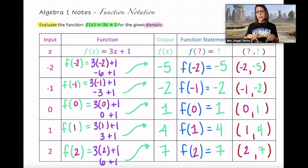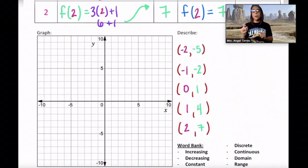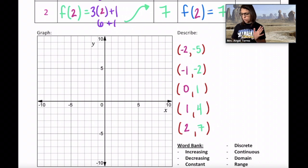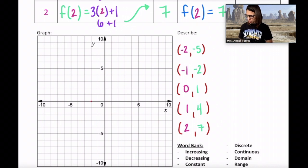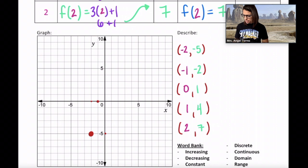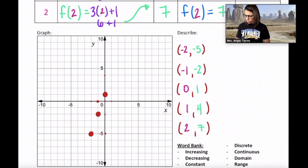Let's take these ordered pairs and put them into a graph. I've gone ahead and copied and pasted them so that I could plot them in the coordinate plane correctly. Negative 2, negative 5 — that's where x is negative 2 and y is negative 5. Negative 1, negative 2 — where x is negative 1 and y is negative 2. 0, 1 — where x is 0 and y is 1. 1, 4 — that point right here. And then 2, 7 — that point right here.